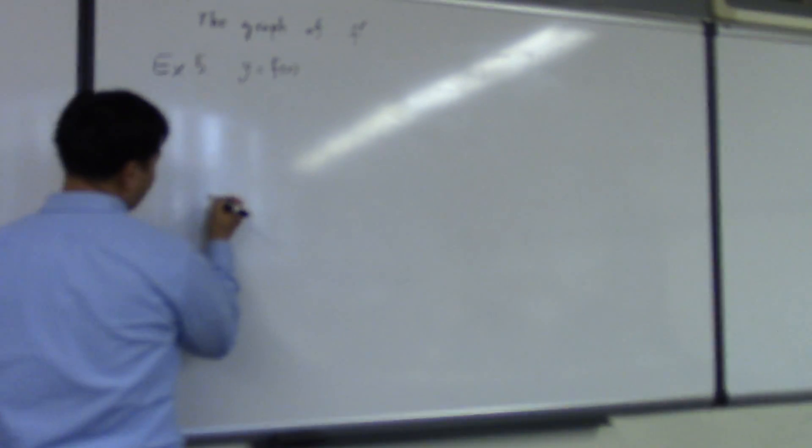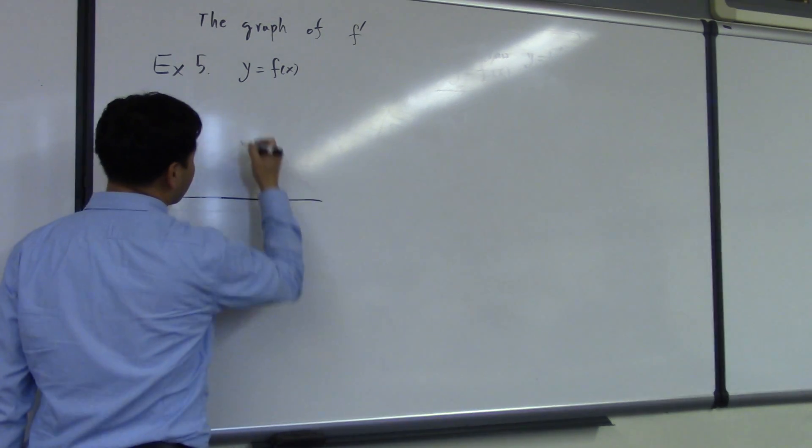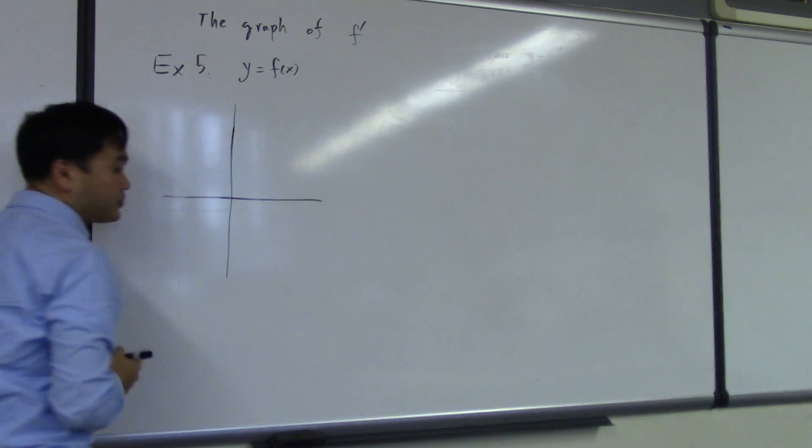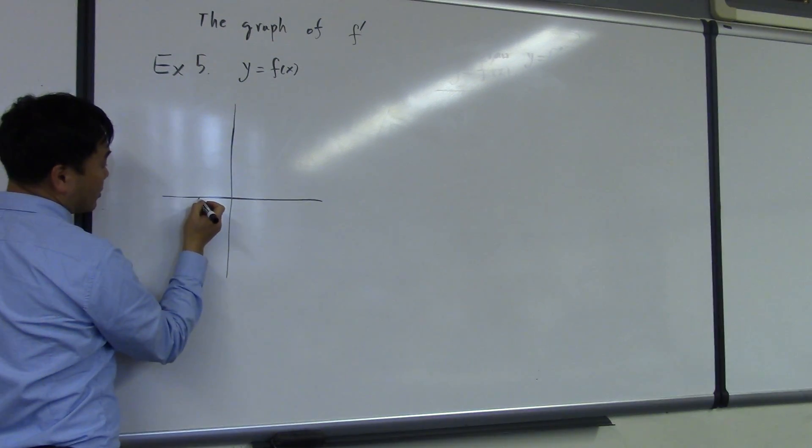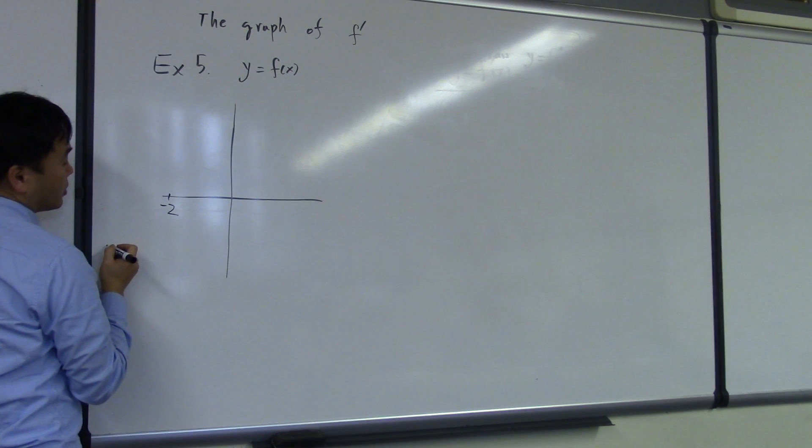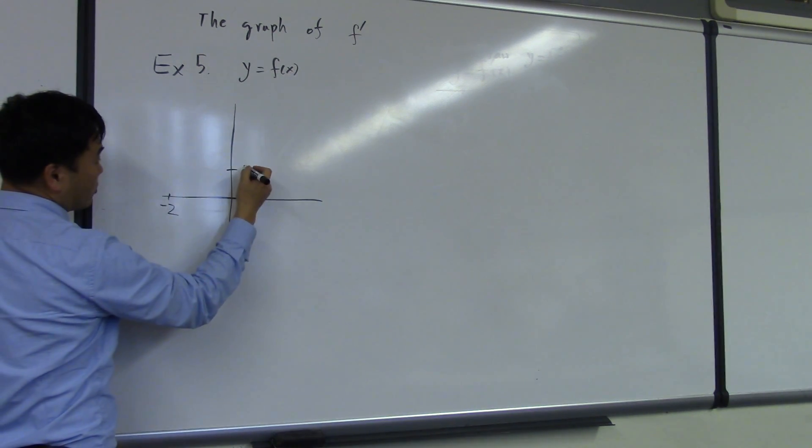When you have piecewise defined functions, let's say here is negative 2 and here is 1.